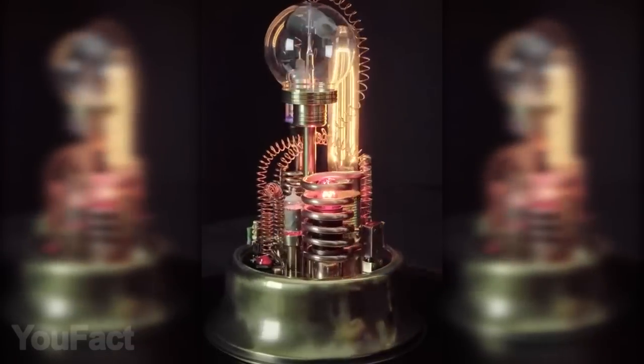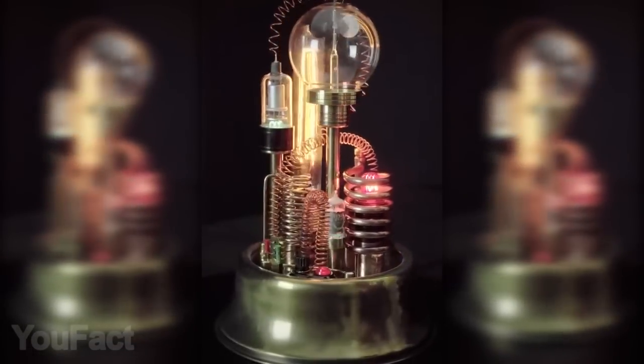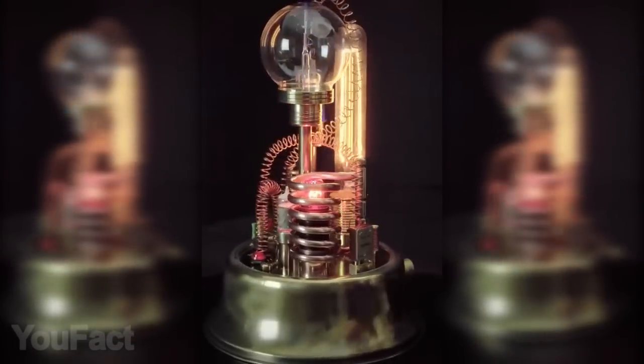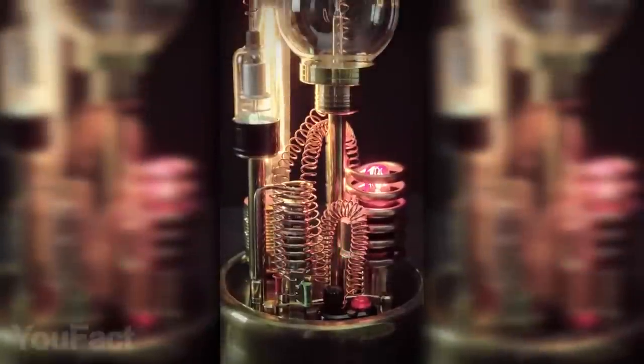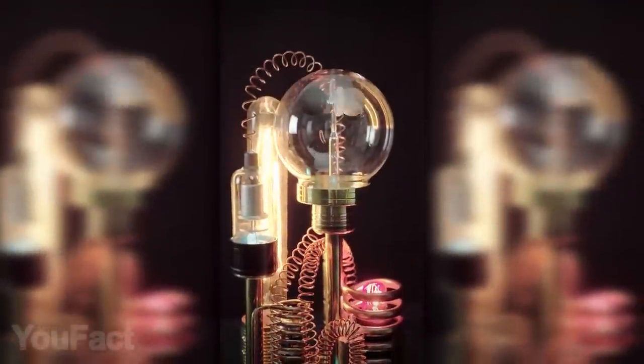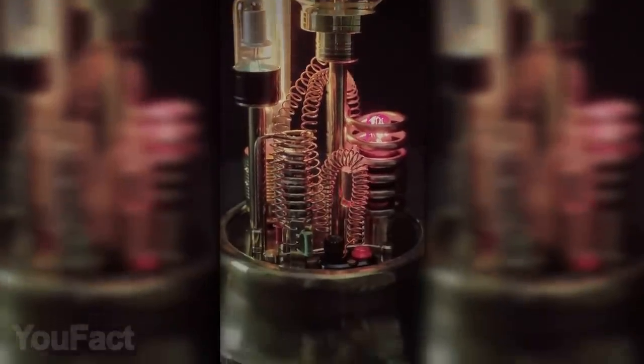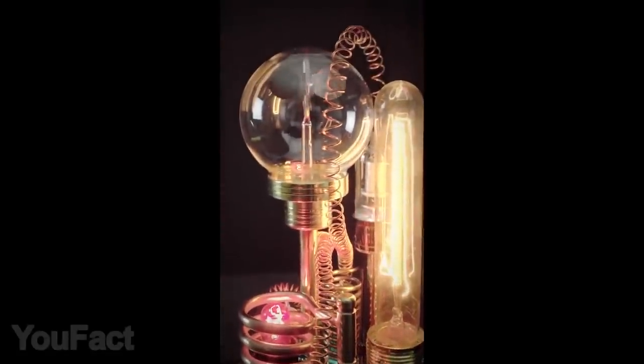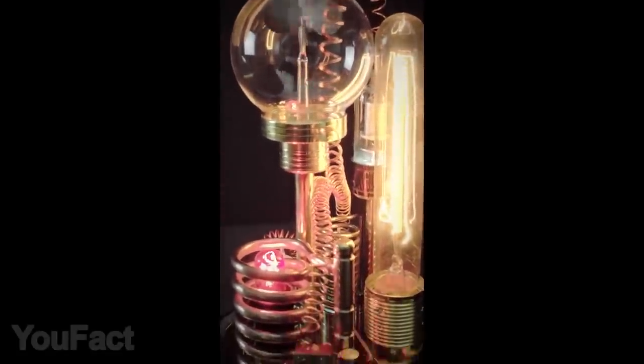Think twice before throwing something out that seems old and useless. This steampunk lamp looks modern and bright, but it's actually made of antiques. You'll see some vintage radio tubes under the glass. They're illuminated by LED lights, which make the gadget glow beautifully from the inside.